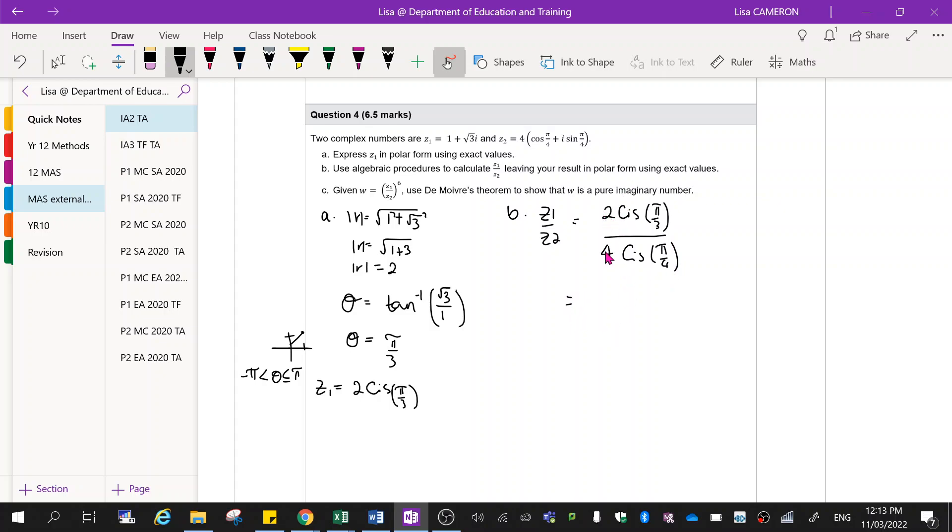Next thing I'm going to do, I'm going to simplify what I've got. So 2 divided by 4 will leave me with a half cis. And now with our angles, we're going to be subtracting. It's always the top one minus the bottom one. Now all I have to do is make them have the same base. So times this one all by 4 and then times this one all by 3, which would leave you with a half cis, 4 pi on 12, minus 3 pi on 12, which will leave you with a half cis pi on 12.